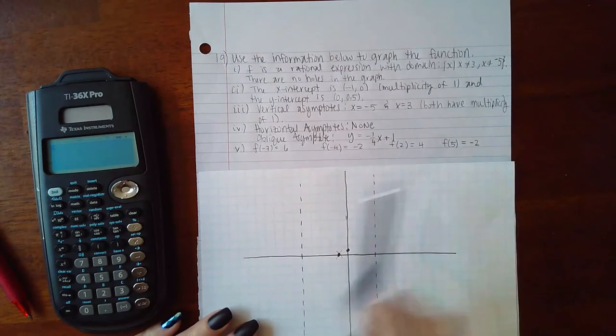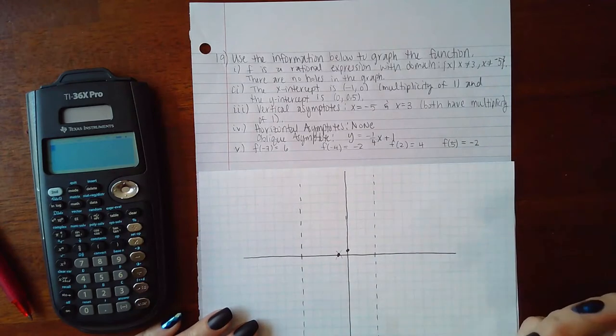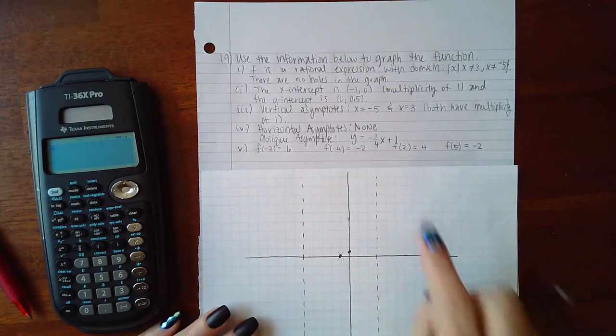Horizontal asymptote, there isn't one. So no dotted horizontal asymptote. However, I have an oblique asymptote. So how do I graph that?